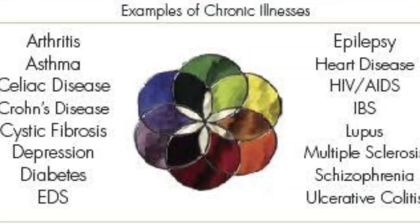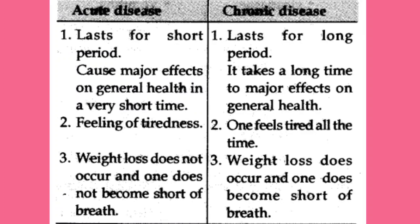Chronic diseases develop gradually and last for long durations, even up to several years to lifelong, and they cannot be cured completely. Their symptoms are mild but have severe effect on a person's health. Difference between acute and chronic: acute lasts for short period, chronic lasts much longer; acute is severe and sudden, chronic is less severe but gradual; acute has no major prolonged effect on health, but chronic causes prolonged poor health.